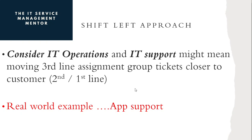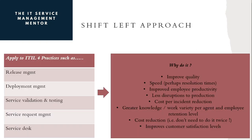That had a positive benefit in terms of first line fix metrics as well. We moved activities that were in the third line assignment group over to the first and second line, which meant quicker resolution times and better first time fix metrics. Thinking about shift left more generally, it applies to a number of ITIL 4 practices: release management, deployment management, service validation and testing, service request management, and the service desk function.